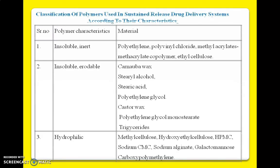Another way to classify polymers is according to their characteristics. The first category is insoluble and inert polymers — practically insoluble in water and non-degrading — such as polyethylene, polyvinyl chloride, methyl acrylate co-polymers, and ethyl cellulose. The second category is insoluble but erodable polymers such as carnauba wax, stearic acid, and castor wax. The third category is hydrophilic polymers, which are not necessarily water-soluble but absorb water, such as methyl cellulose, hydroxyethyl cellulose, HPMC, sodium CMC, and sodium alginate.